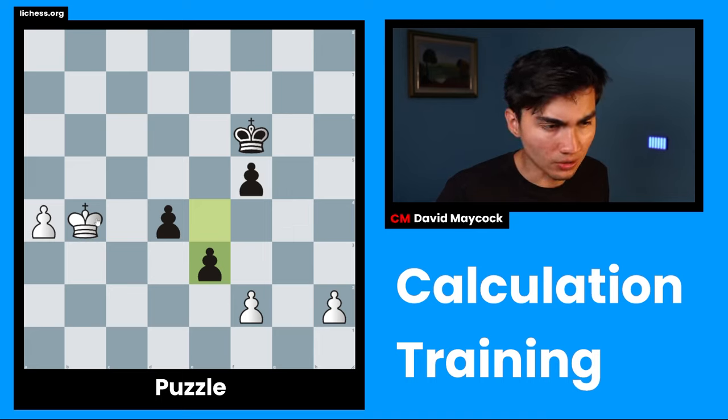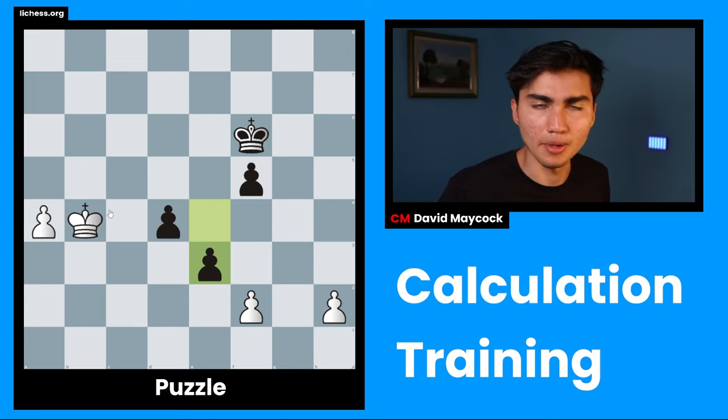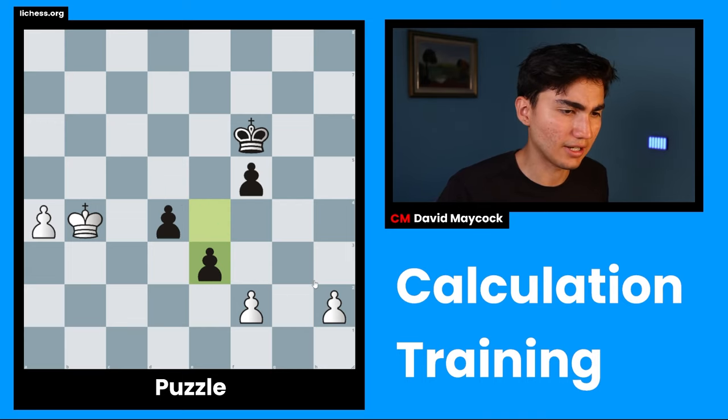In pawn endgames, I also like start thinking about motives. So for instance, a motive could be black promoting with check. That's a motive, something I have to watch out. Something that I already know at the back of my mind while calculating. Another motive might be that maybe one side promotes with check and then there's a skewer to the queen. I think this one's unlikely though, because we need a pawn. We need, let's say this pawn was on a2 and this pawn was on h7 and black played a1.